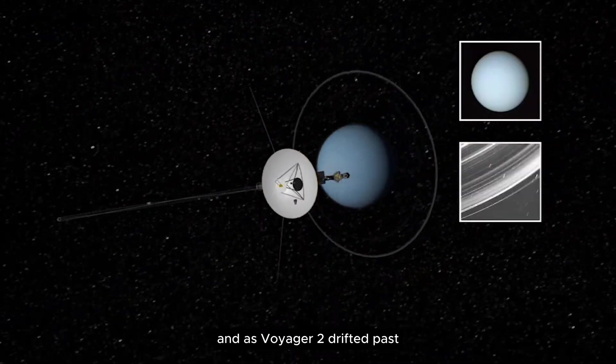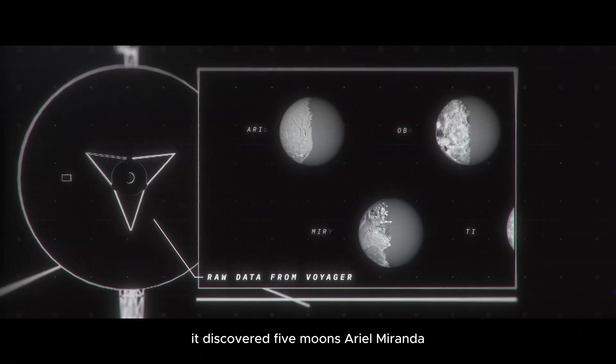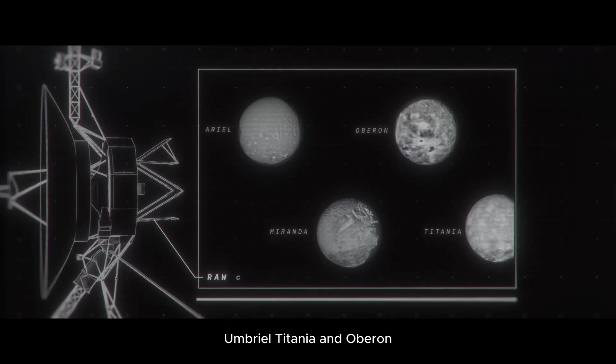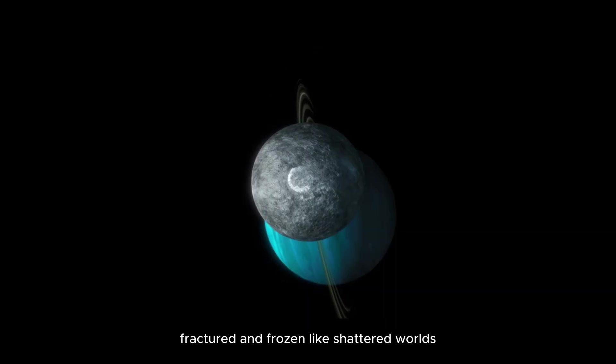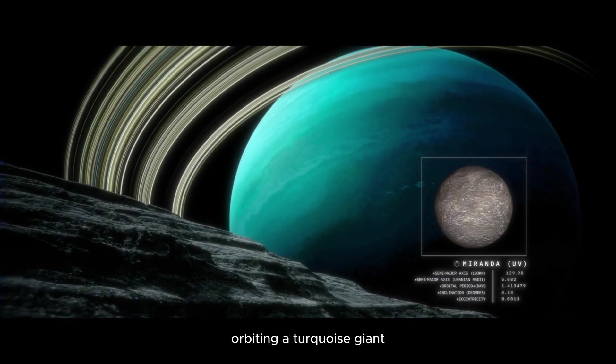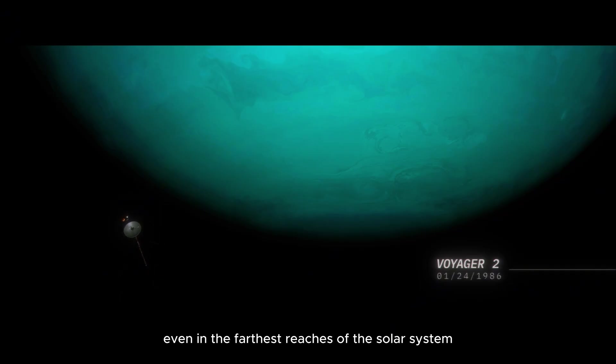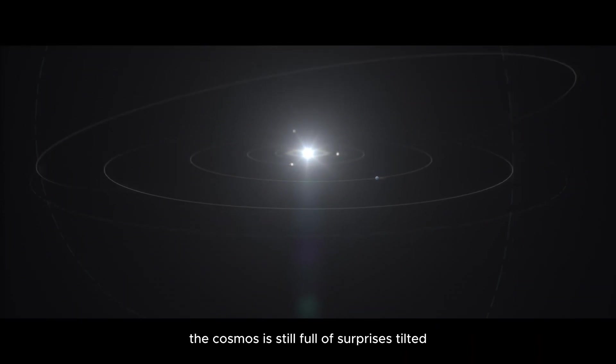And as Voyager 2 drifted past, it discovered five moons. Ariel, Miranda, Umbriel, Titania, and Oberon. Each one scarred, fractured, and frozen, like shattered worlds orbiting a turquoise giant. Voyager showed that even in the farthest reaches of the solar system, the cosmos is still full of surprises. Tilted, broken, and beautiful.